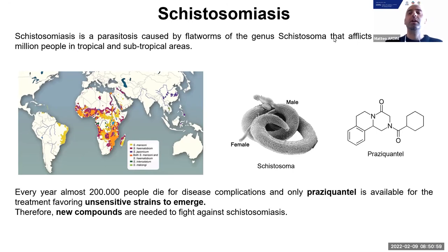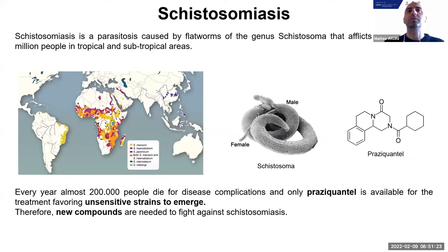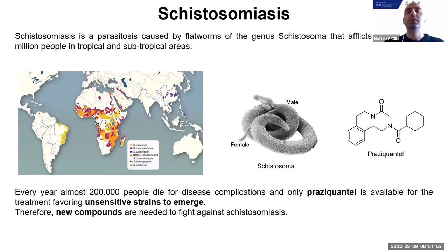This is the disease we are facing. It is called schistosomiasis, caused by a flatworm of the genus Schistosoma, afflicting more than 200 million people in tropical and subtropical areas. This disease kills 200,000 people every year. The main problem is that there is only one approved drug to fight schistosomiasis — praziquantel — which is very effective to kill these worms. But as you might imagine, it can cause the emergence of insensitive strains, so there is an urgent need to make new compounds.